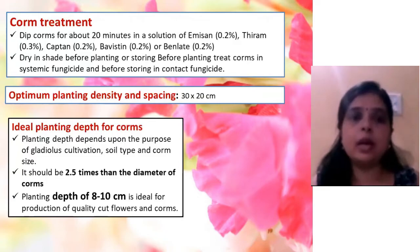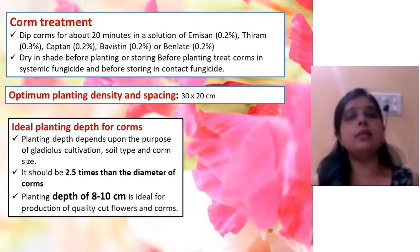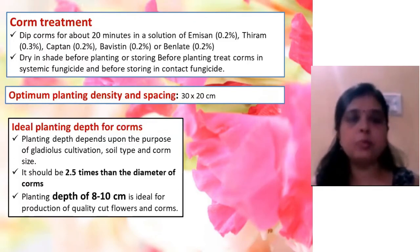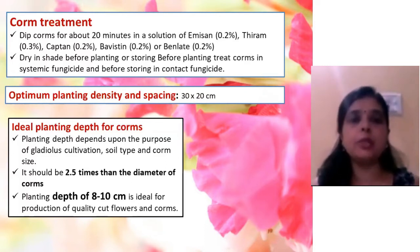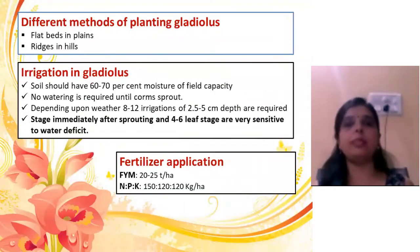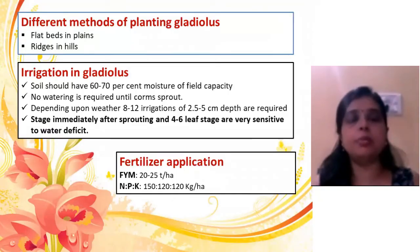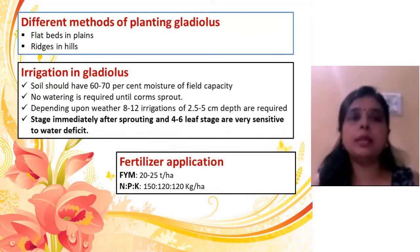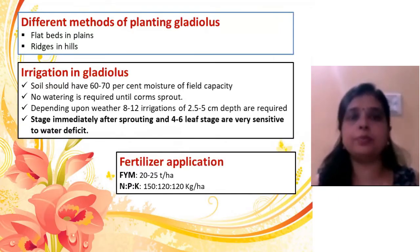The ideal corm diameter is 5 cm and the ideal planting depth is 8 to 10 cm to get quality cut flowers and corms. In plain conditions, flatbeds are used, but in hills, ridges are used for planting gladiolus. Just after planting the corm, do not water immediately. After sprouting, go for watering, and depending on weather conditions, 8 to 20 cm irrigation is recommended.